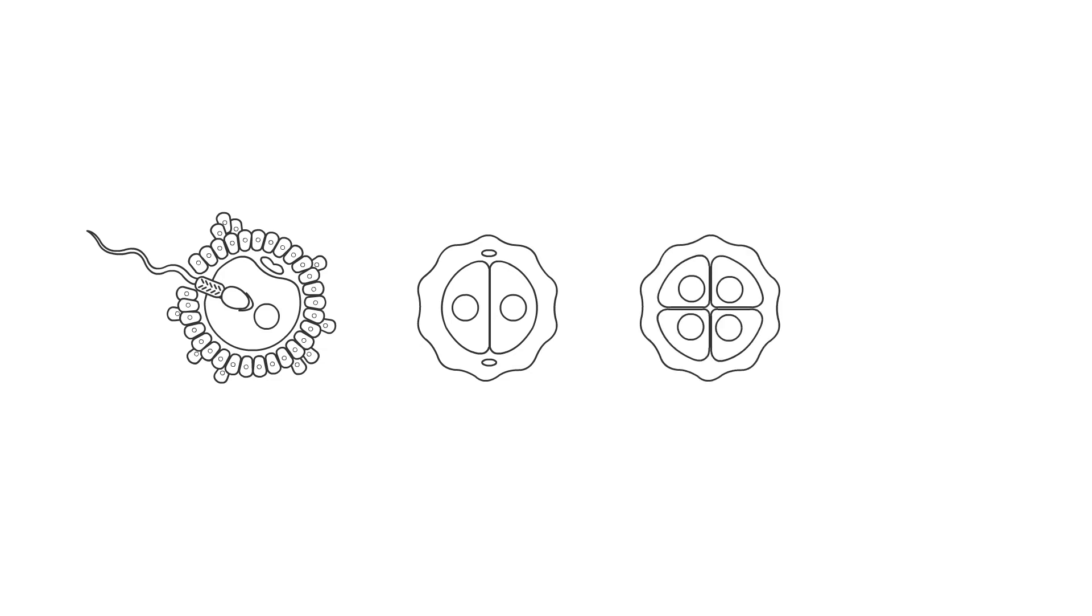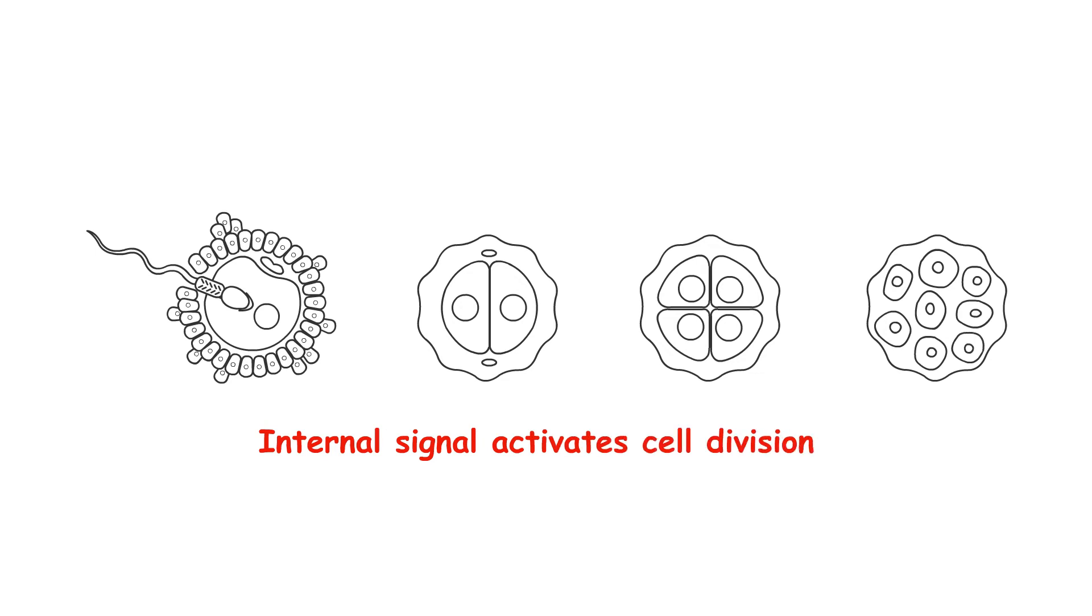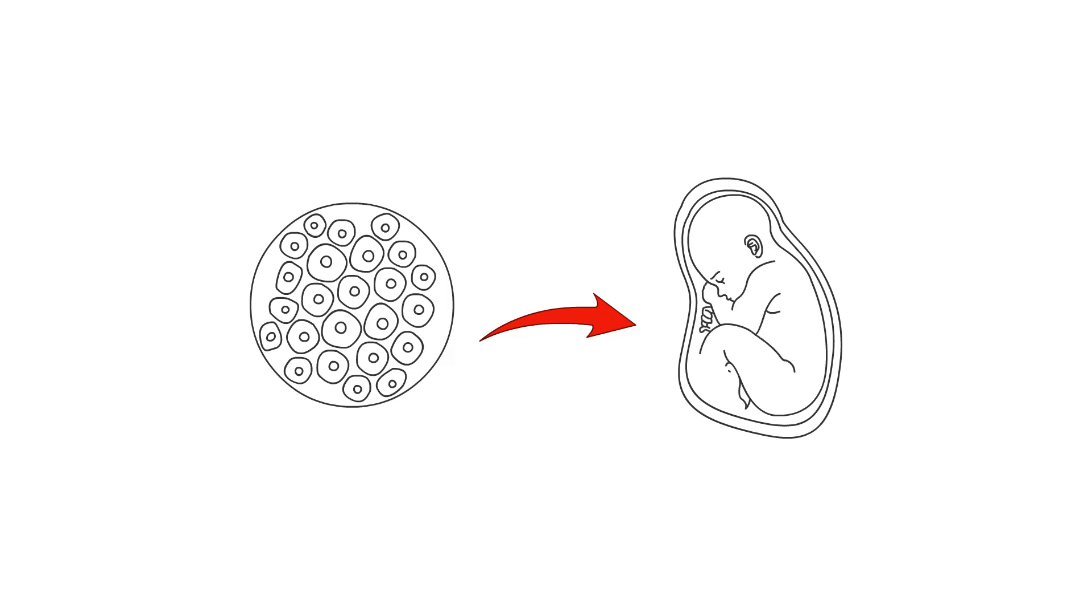The earliest cells that begin to form after the sperm enters the ovum are called stem cells. They are just like the very first cells that divided on Earth, which I call the atom cell because they use an internal signal to activate cell division. Starting in the embryo, the body produces totally potent stem cells that divide in response to their internally generated signals. These stem cells can become any type of cell in the body.